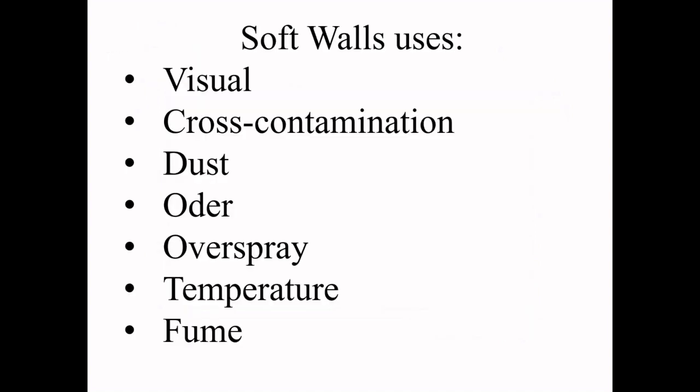Soft walls are used for a variety of reasons. The first one is visual control — you want to keep an area so that other people cannot see what's going on inside of it. We also do cross-containment separation, dust containment, odor containment, overspray, temperature control — perhaps you have one side of your warehouse that's air conditioned and the other side is not — and also fume control.